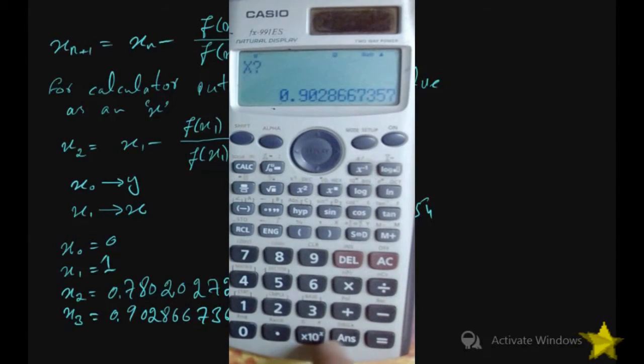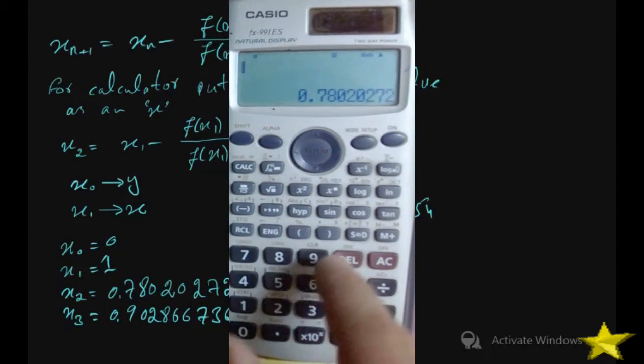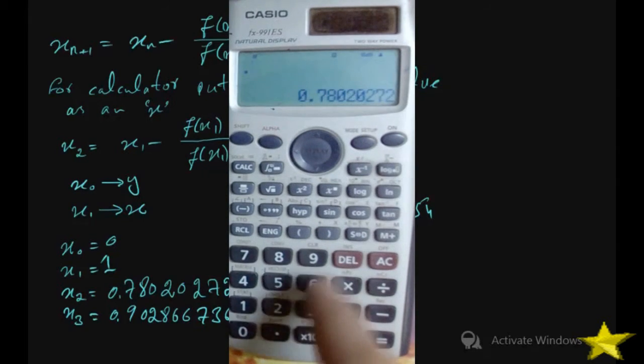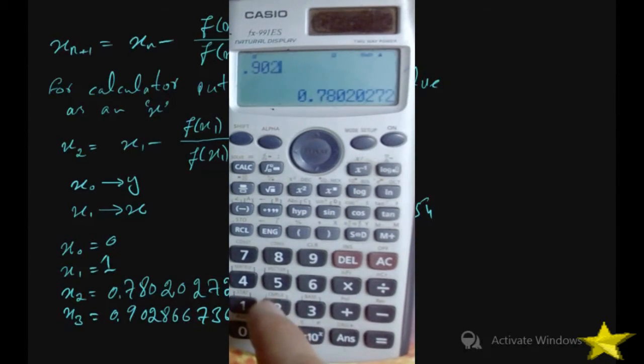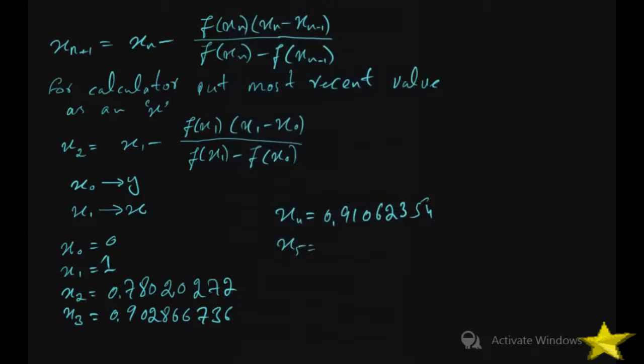To find x5, press calc, enter Ans (the recent value which is x4), and enter x3 for y, which is 0.902866736. We get 0.910049601. Similarly, find x6.